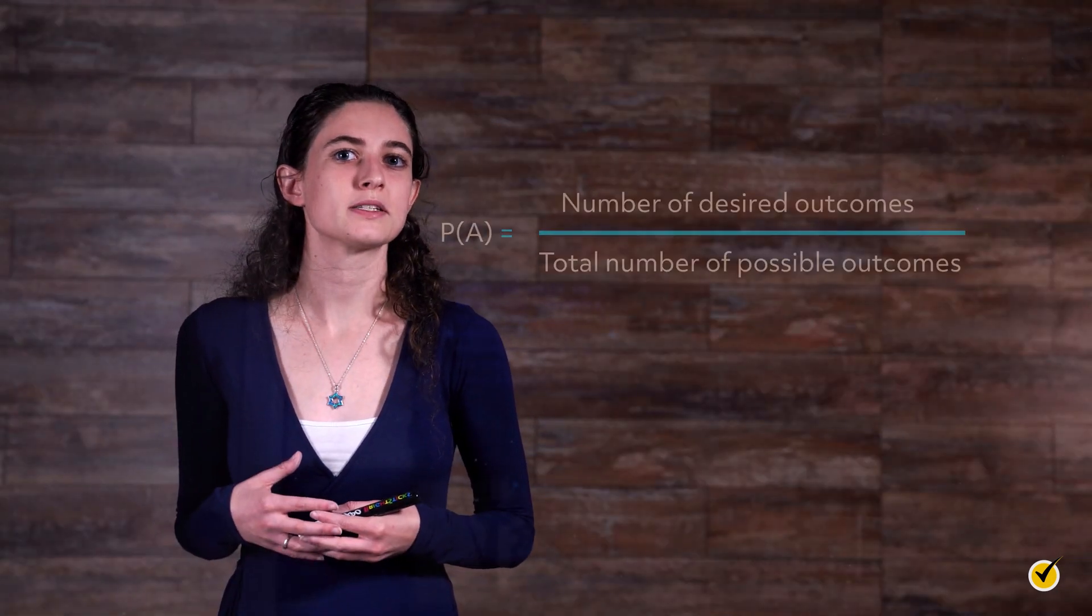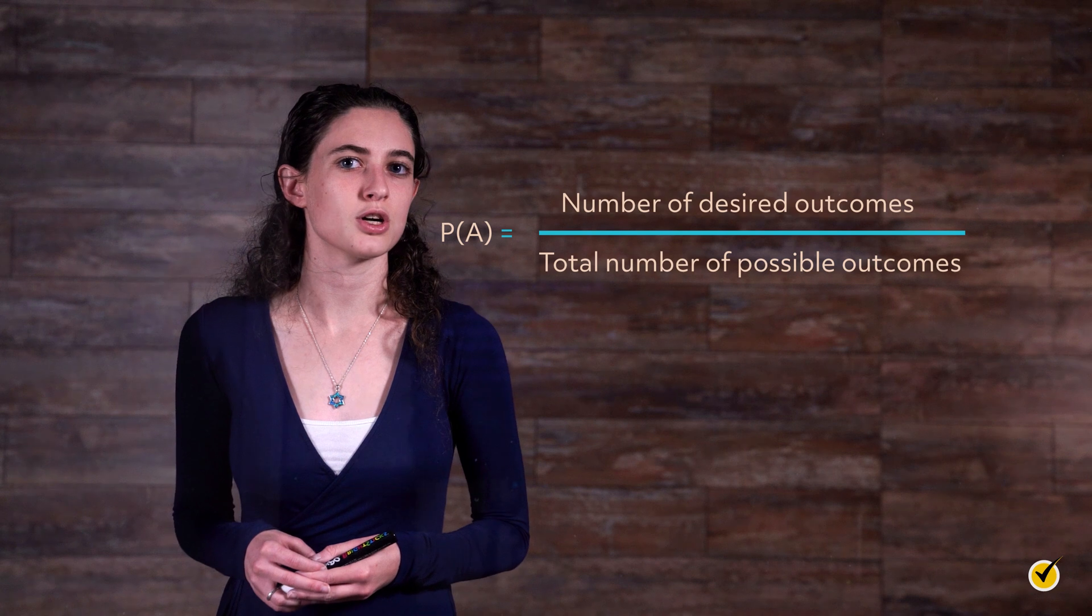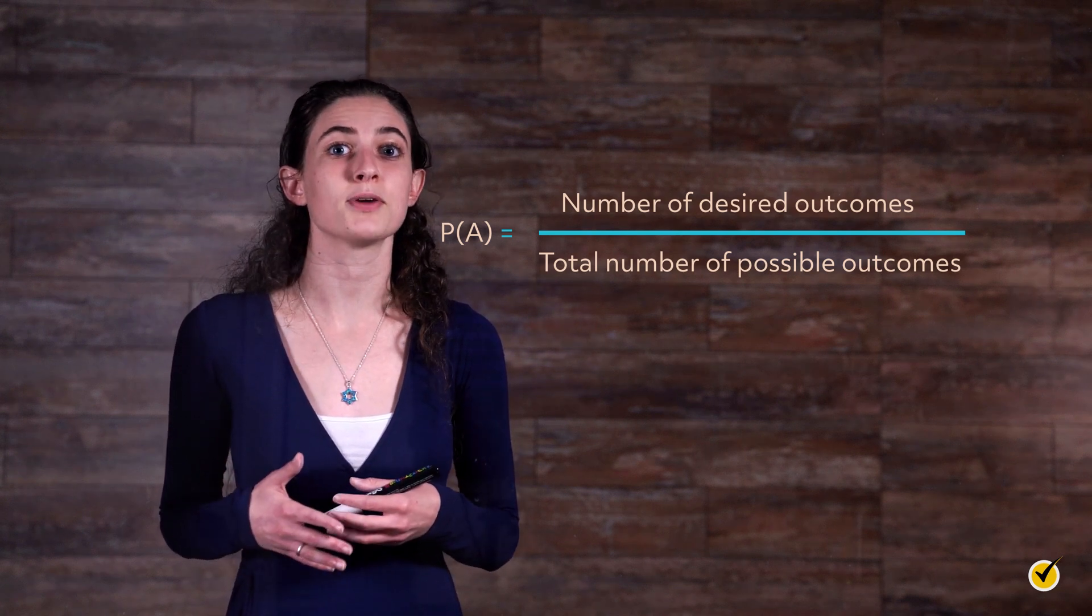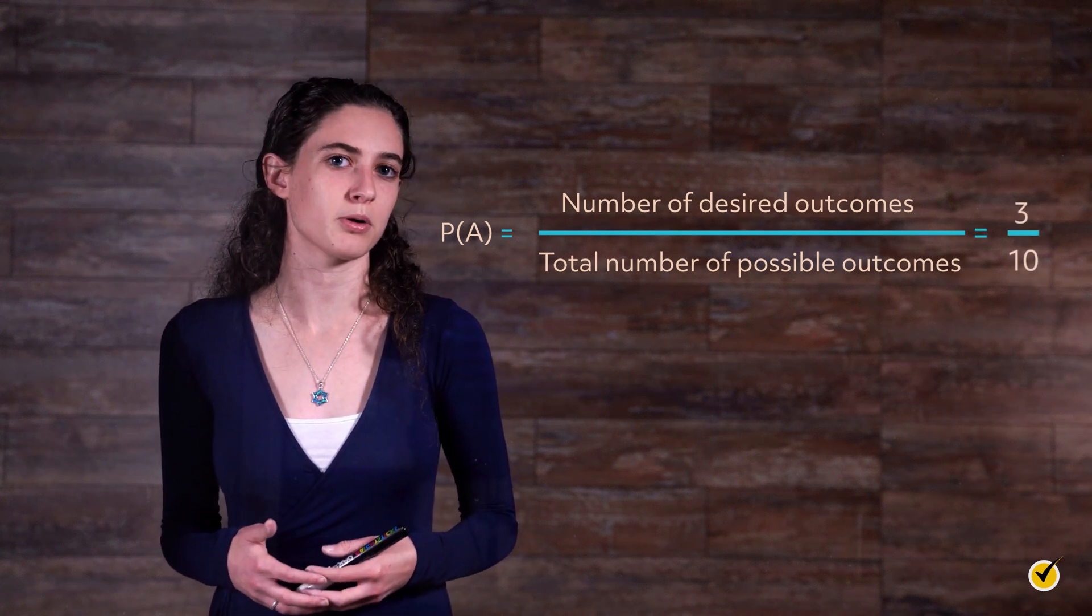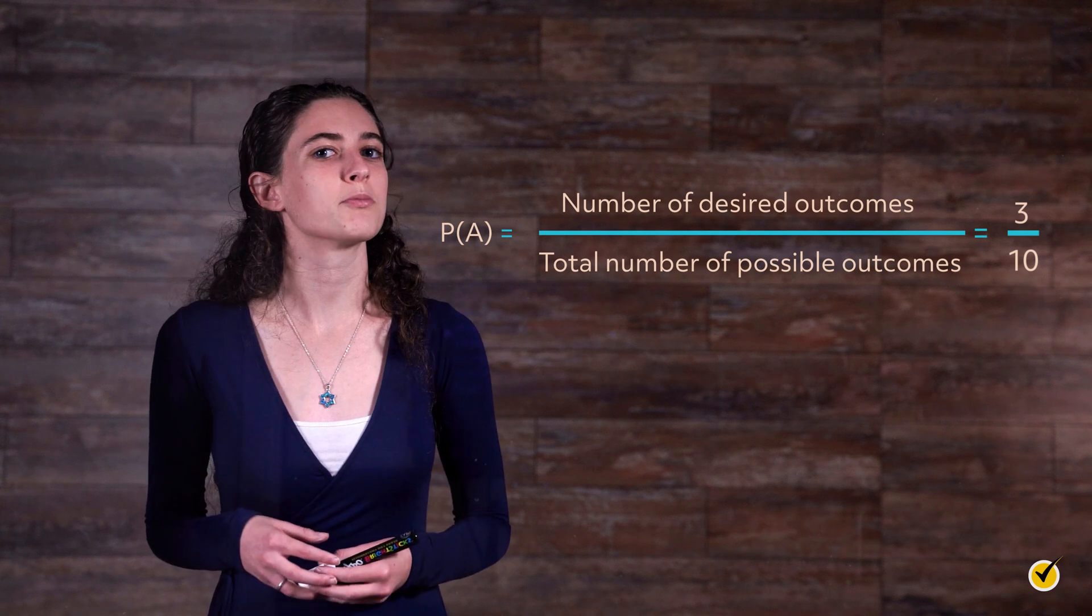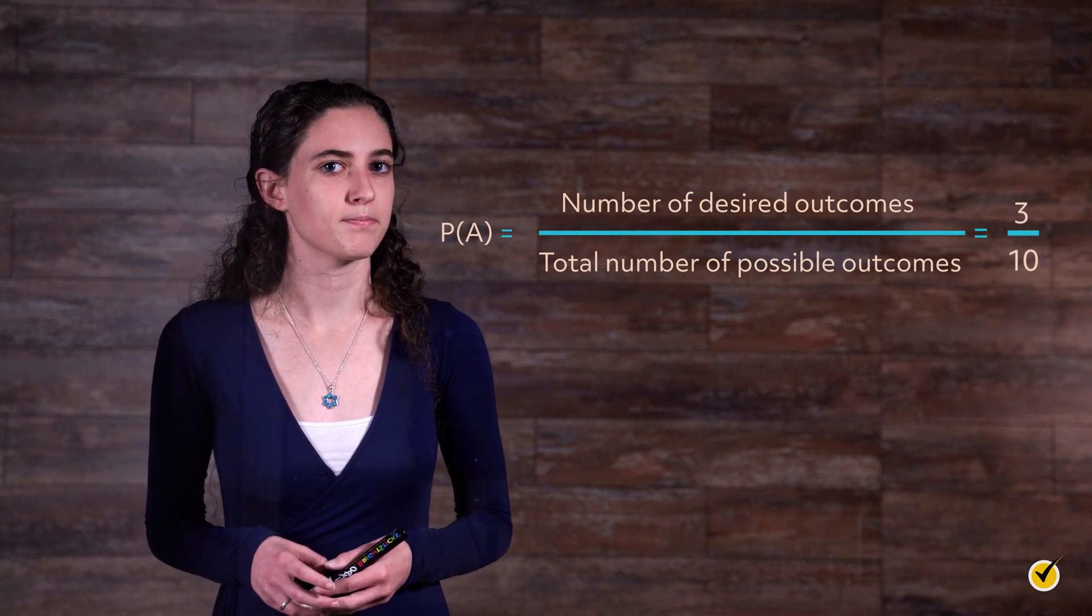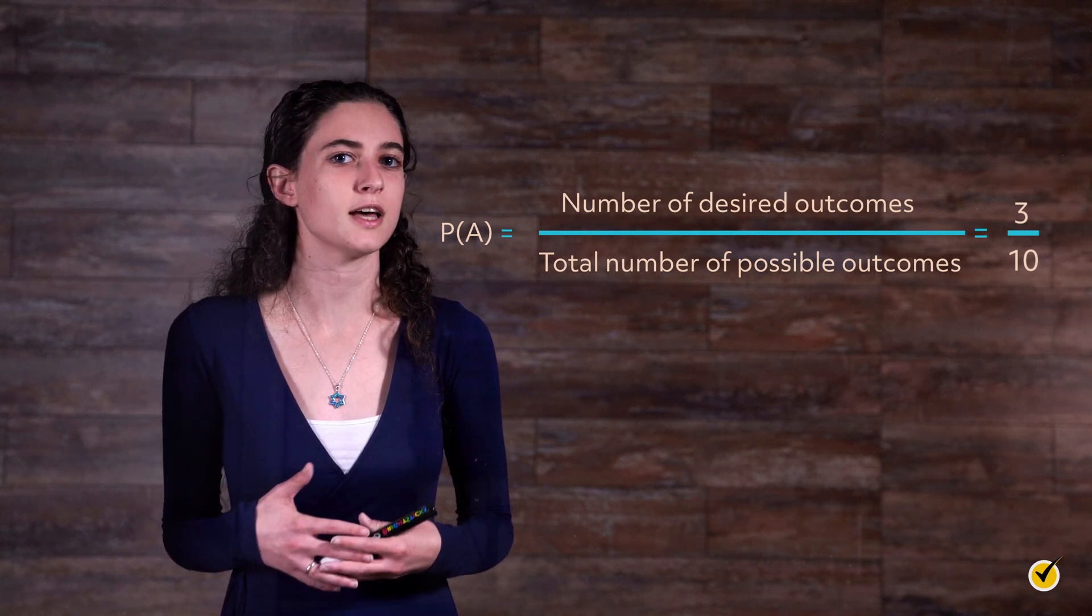To solve this, we'd place the number of desired outcomes on the top. In this case it'd be 3, because there are 3 red marbles. And the total number of possible outcomes on the bottom. This is 10, since there are 10 total marbles in the bag. Seems pretty straightforward, right?